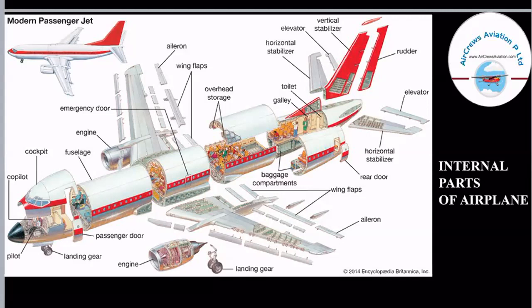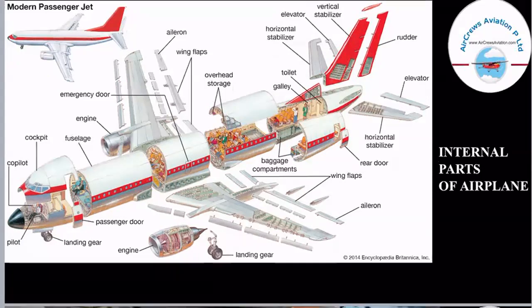On the wing section we have wing flaps as well as ailerons, and onto the wing we have an engine connected to it. Just below the aircraft we have the landing gear portions — one landing gear situated just below the nose, and the next just below the wing area connected to the fuselage. This was all about the internal parts of the aircraft.